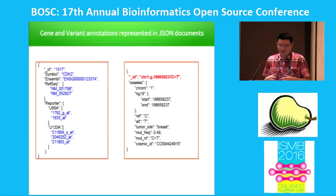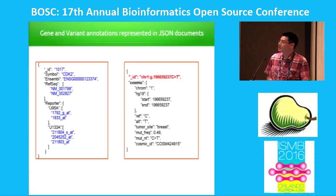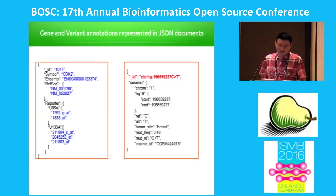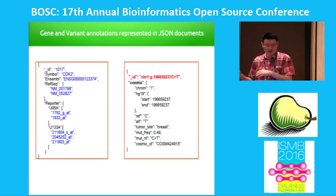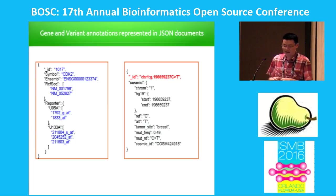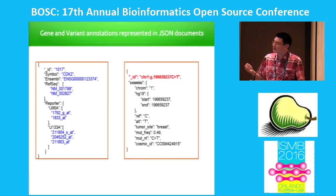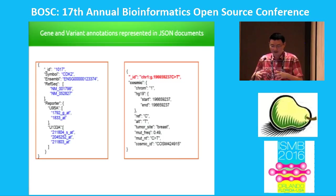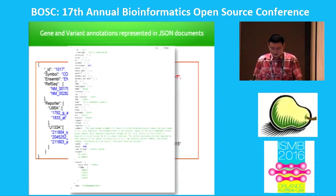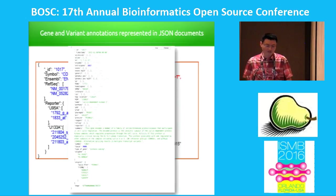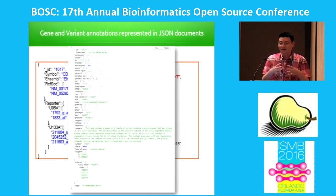Here's an example of gene annotation and variant annotation represented in a JSON document. On the left-hand side is a gene annotation — you have an internal underscore ID as an identifier, in this case an NCBI gene, which could also be an Ensembl gene, with a bunch of attributes nested under this document. On the right-hand side is a variant document, with the HGVS ID, collecting data from Cosmic, ClinVar, ExAC, 1000 Genomes, and everything related to this variant under one document. Basically, anything about a particular gene we try to aggregate into one document.